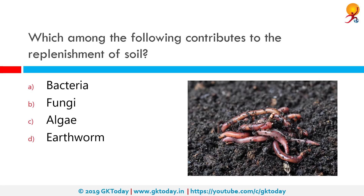Which among the following contributes to the replenishment of soil? The correct answer is Earthworm. Worms help increase the amount of air and water that gets into the soil. They break down organic matter like leaves and grass into things that plants can use. When they eat, they leave behind castings that are a very valuable type of fertilizer. Earthworms are like free farm helpers.